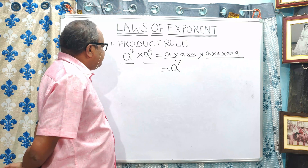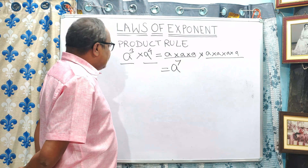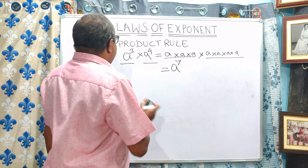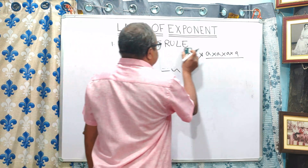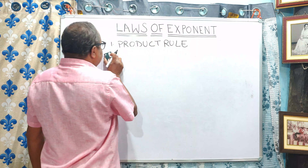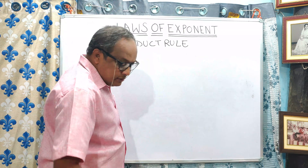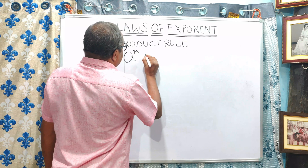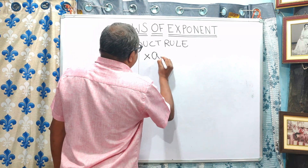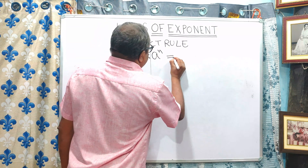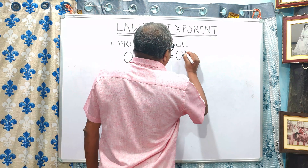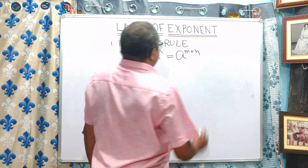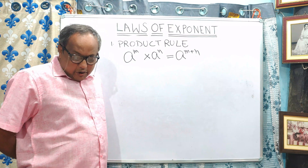As a formula, we can write it in this manner: A to the power m multiplied by A to the power m is equal to A to the power m plus m. This is called the product rule.